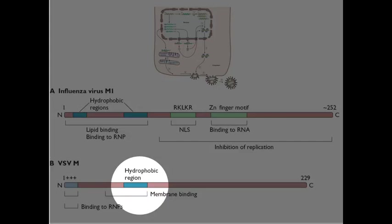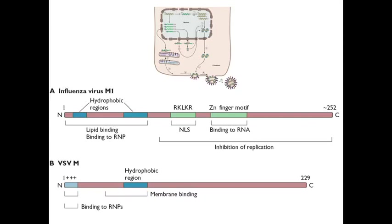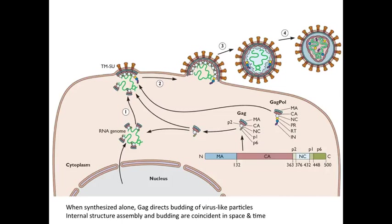The same is true for VSV — there are very specific sequences that drive membrane binding. If you change them by mutating the sequence, you abolish particle formation because the M proteins cannot go to the plasma membrane.